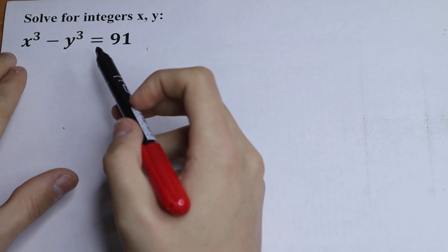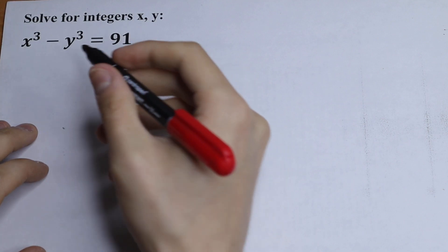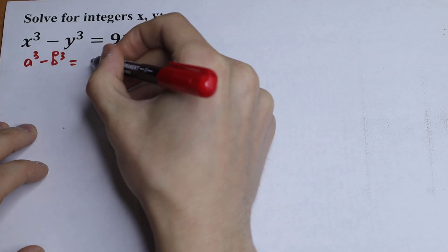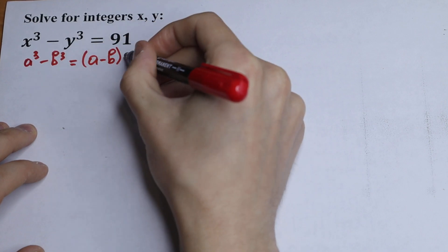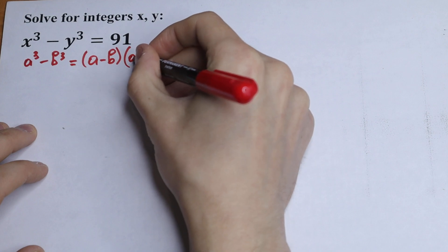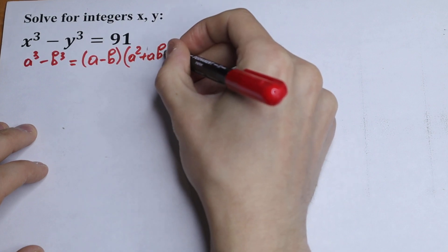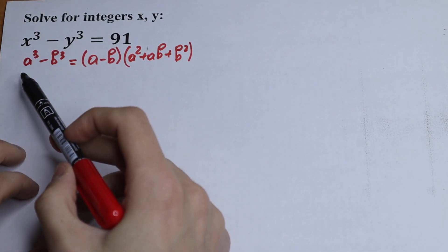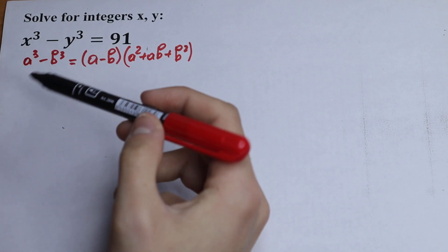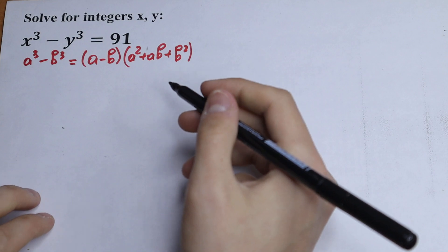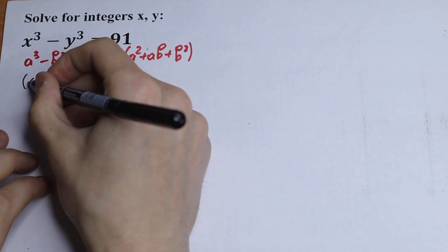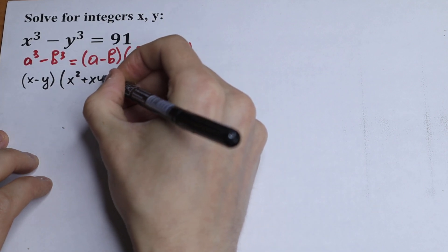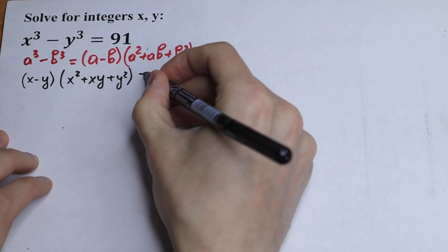How can we do this? First of all, we have a difference of cubes right here, so we can use the formula. If we have a³ minus b³, it will be equal to (a minus b) times (a² plus ab plus b²). So let's use this formula, but instead of a we will use x and instead of b we will use y. So we will have (x minus y)(x² plus xy plus y²) equals 91.